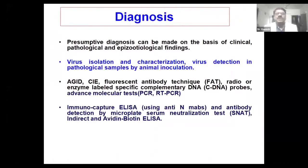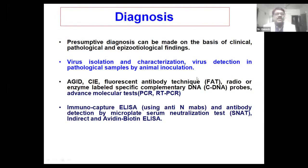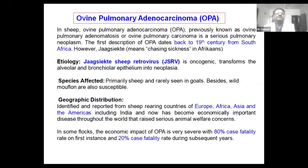For diagnosis, a presumptive diagnosis can be made on clinical and pathological lesions and epidemiological findings, followed by virus isolation and characterization. Tests include AGID, CIE, and FAT. But recently, people are using specific PCR and RT-PCR tests. Also, there are a lot of ELISAs developed for identification of PPR.